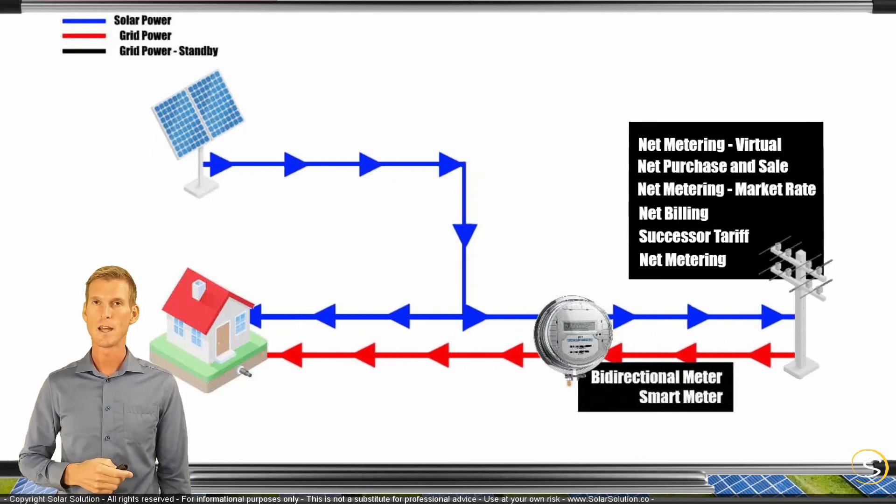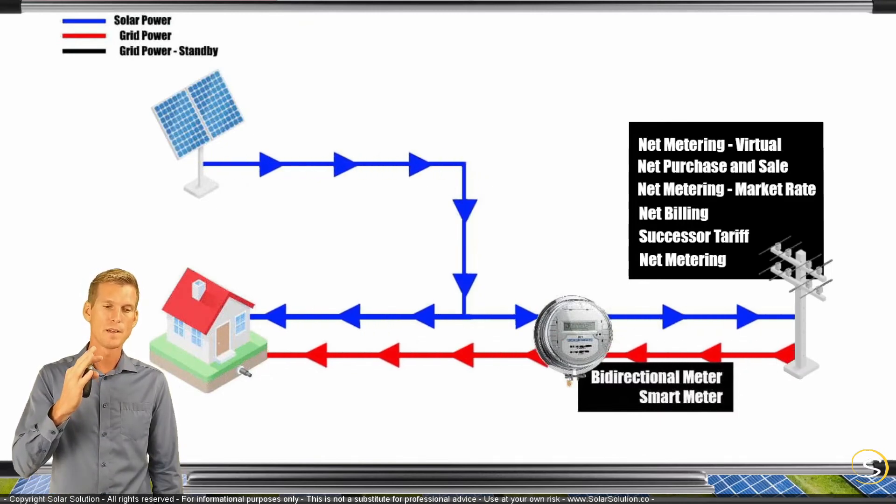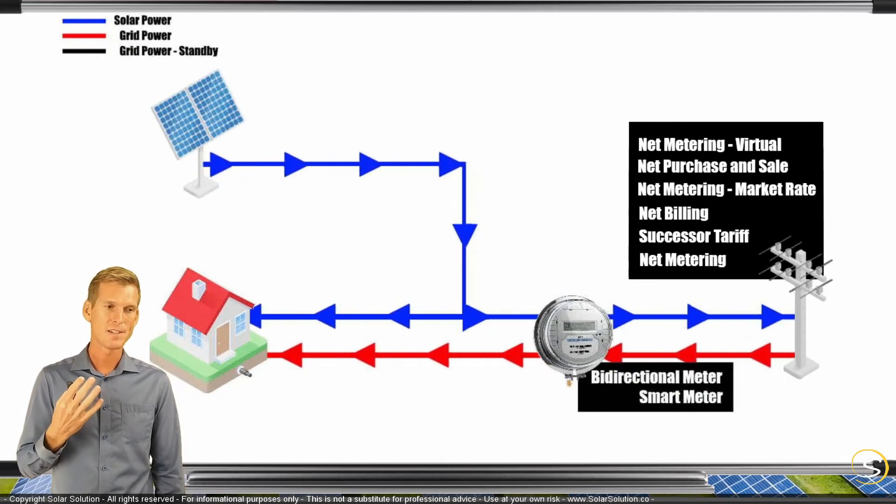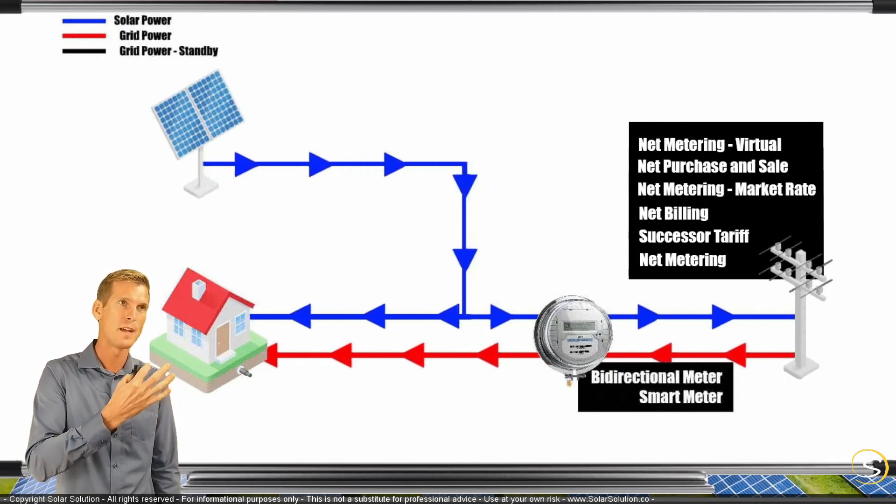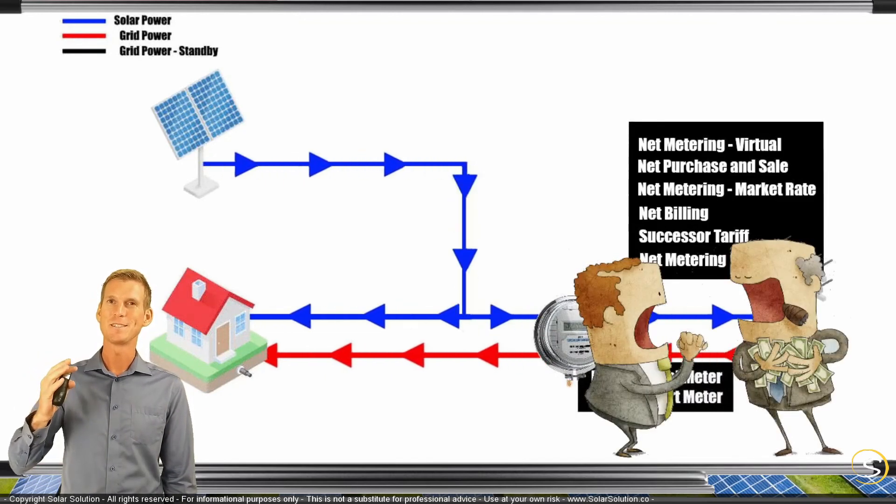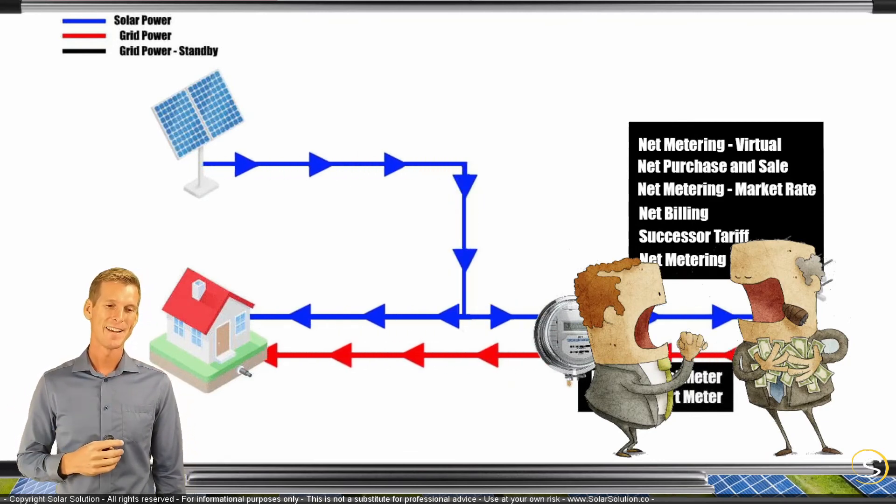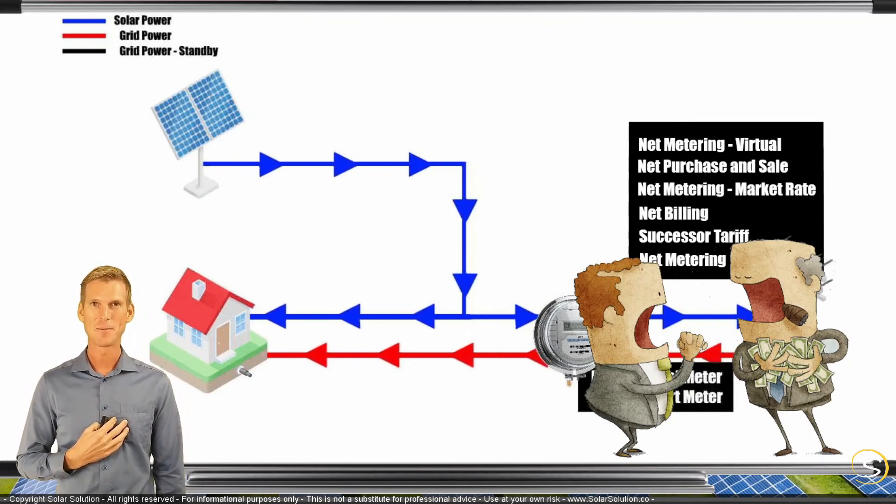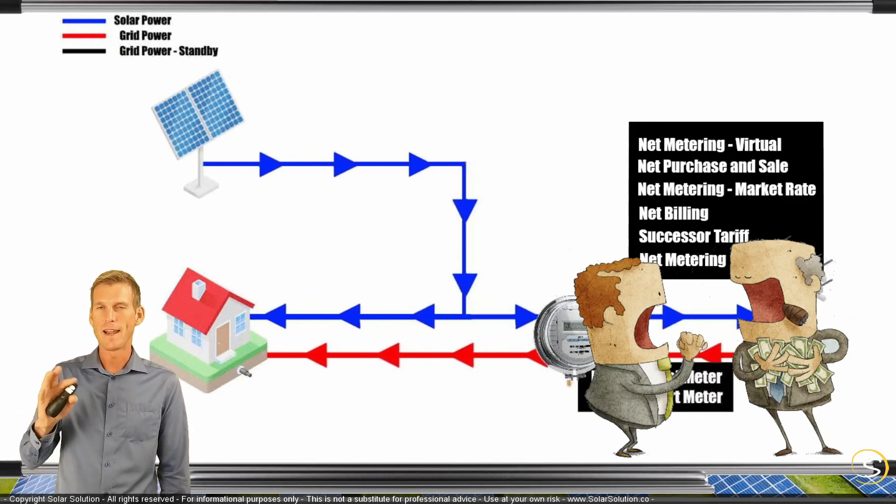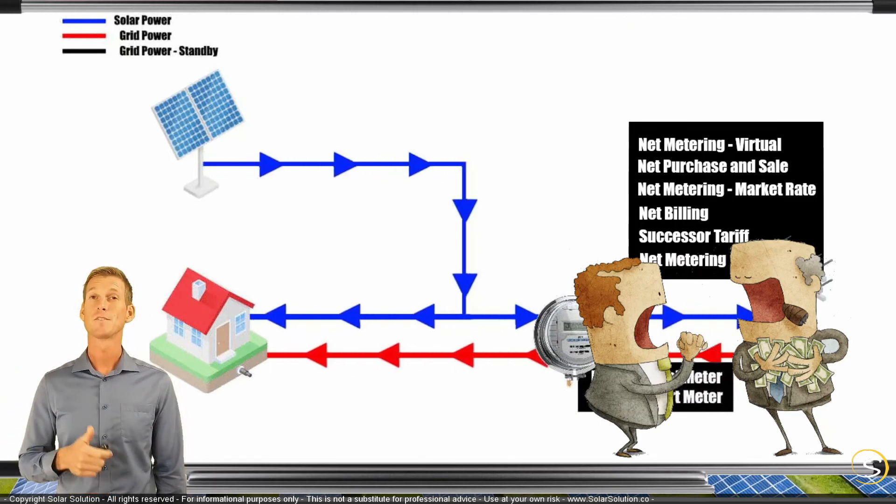I hope it becomes clear by now that all of these different structures, all of these different compensation models, actually don't change much about the actual structure of your grid-tied system. It's all about negotiations between you as the local power producer and the utilities. Sometimes we can do something about it, most times we cannot, but this is all about the financial agreements between you and the utilities.